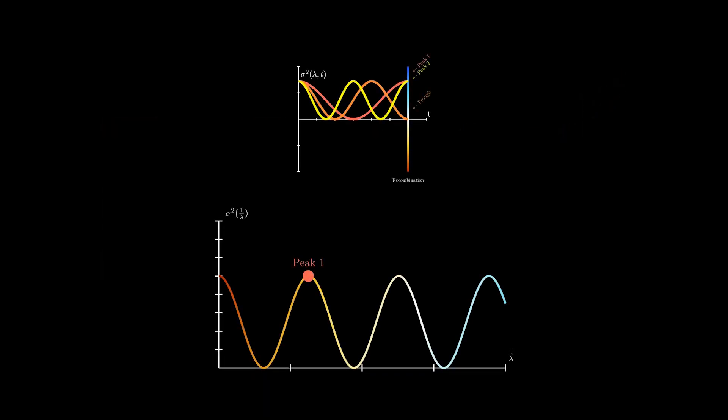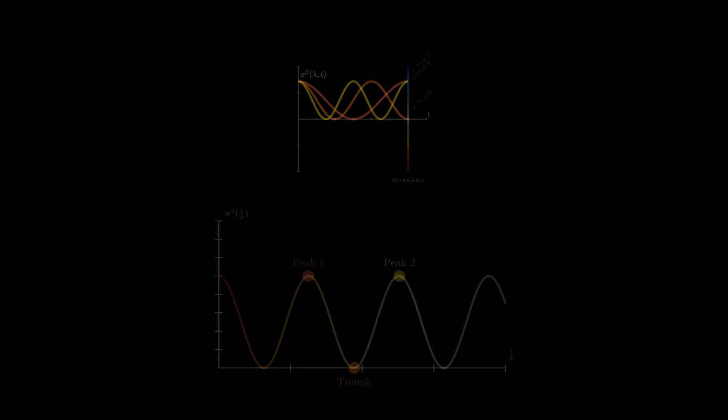For simplicity here, we are employing a toy model that only demonstrates how we get a series of periodic peaks in the power spectrum. For the case of the real CMB, there is additional physics involved in producing the exact shape that we see.